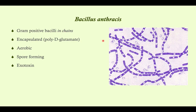B. anthracis has gram-positive bacilli in chains, so you can see here that they're forming these little chains. They're also encapsulated — you can't see the capsule here — but what is super important to know is that it is a poly-D-glutamate capsule; it is a polypeptide. We talked about other encapsulated bacteria that may have polysaccharide capsules or hyaluronic acid capsules, but this one is a polypeptide capsule. And this is the only bacteria that has a polypeptide capsule — very unique.